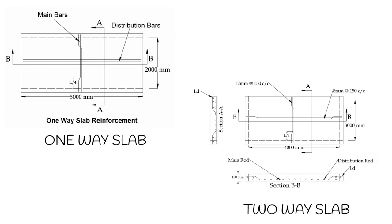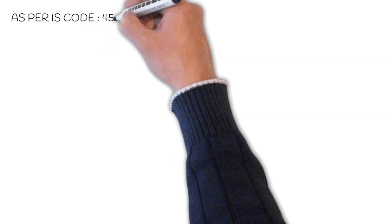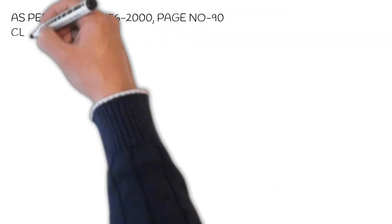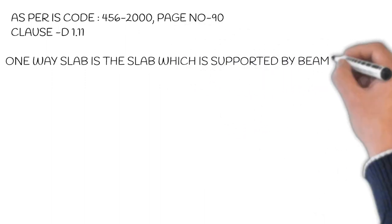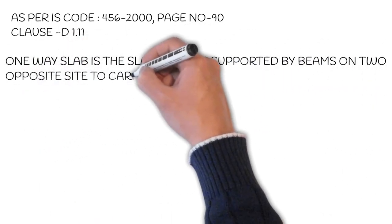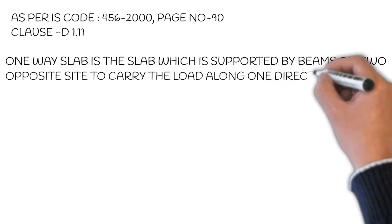As per IS Code 456-2000, Page Number 90, Clause D-1.11: One-way slab is a slab which is supported by beams on two opposite sides to carry the load along one direction.